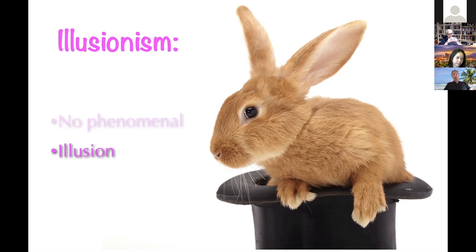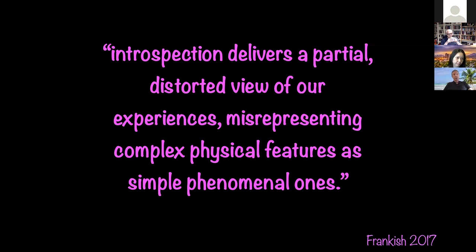The argument is that the illusion is adaptive. Evolution by natural selection has shaped this illusion into our species, presumably because it enhances our fitness. As Keith Frankish has put it, introspection delivers a partial, distorted view of our experiences, misrepresenting complex physical features as simple phenomenal ones. Our sensory systems are physical and their outputs are physical, not phenomenal. It is other brain processes — introspective processes — that misrepresent the physical processes of the brain as phenomenal.